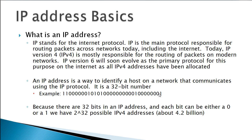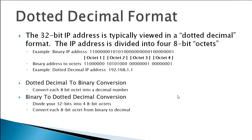Because there are 32 bits in an IP address and each bit can have two possible values, that means we can have 2 to the 32nd power possible addresses, or about 4.2 billion. Now, when humans look at a 32-bit long string like that, it's really not very easy to read — we'd all go nuts if we had to manage our networks based on 32-bit binary numbers.